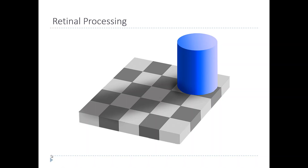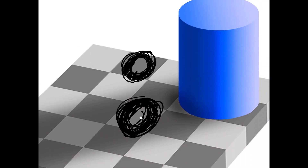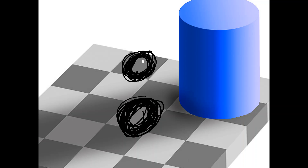If I come over here and use my pen to block off the surrounding color information, you can see that this color right here is the same as this color right here. By placing them next to each other, this shade of gray is exactly the same as this. If you don't believe me, you're welcome to download this image and look at it on your own screen.